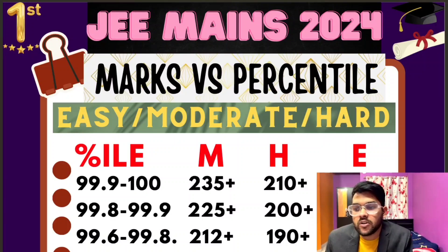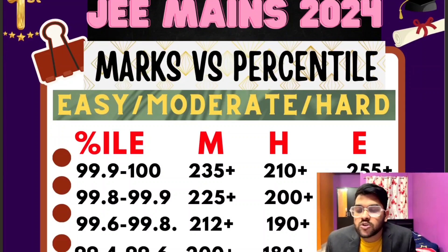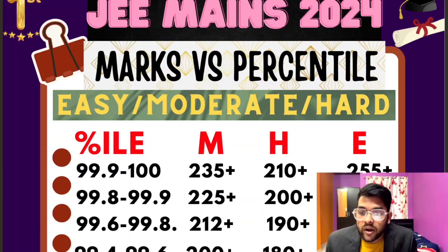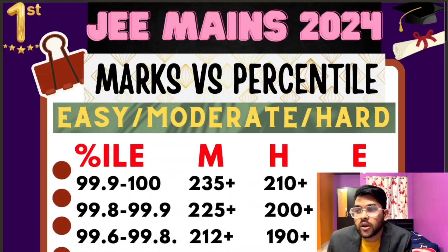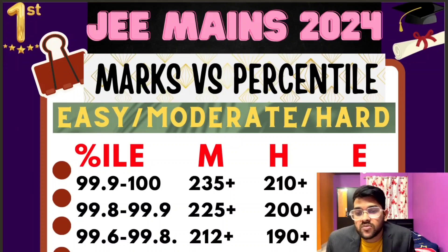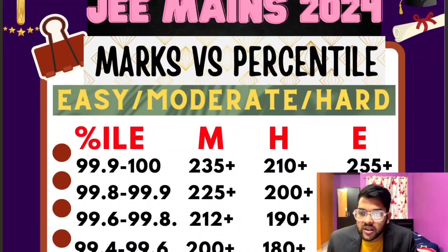If you want 99.9+ percentile — that is the top student — your marks should be 235+ for moderate/hard paper, 210+ for easy paper, and 255+ for a harder variant. This data is exclusively for the first attempt. For the second attempt, marks will change, so please keep these marks in mind.